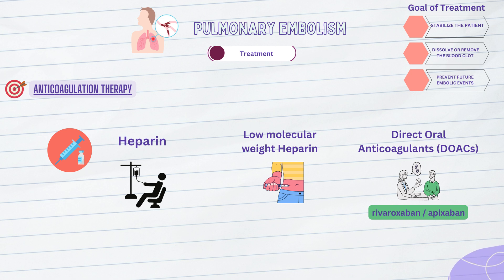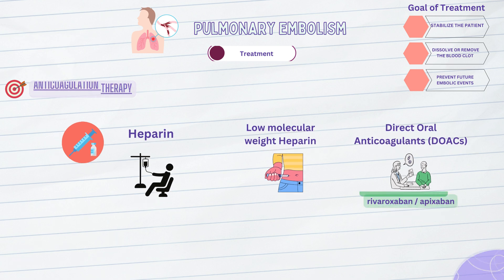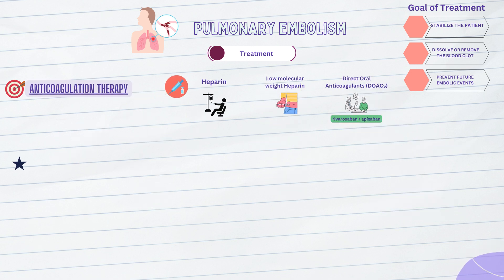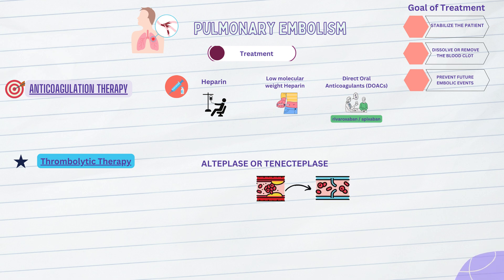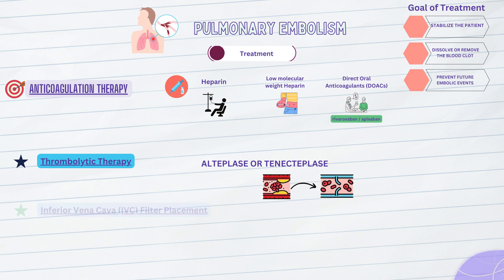In certain cases of pulmonary embolism, additional treatment options may be considered. Thrombolytic therapy involves the use of medications, such as alteplase or tenecteplase, to rapidly dissolve blood clots. This treatment is reserved for patients with severe or high-risk pulmonary embolism, as it carries a higher risk of bleeding complications.